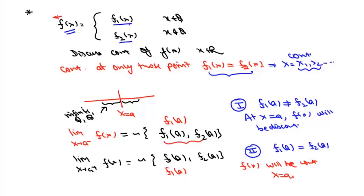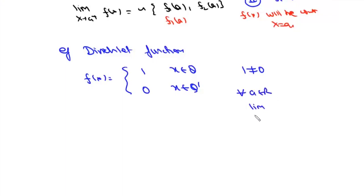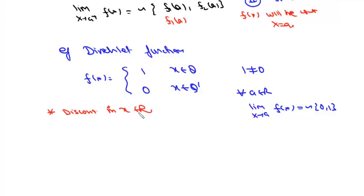For example, consider the Dirichlet function, defined as 1 when x is rational and 0 when x is irrational. In this case, 1 can never equal 0. So for all a ∈ ℝ, the limit of f(x) as x → a will be an oscillating value between 0 and 1. Therefore this function is discontinuous for all x ∈ ℝ. This is an example of a function that is discontinuous at every single point — there is not even one point at which it is continuous.